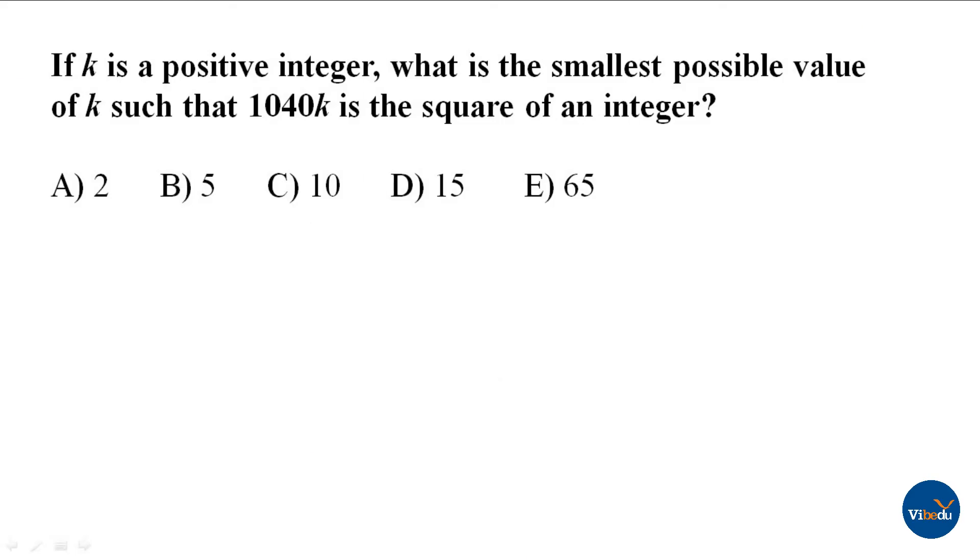The question is, if k is a positive integer, what is the smallest possible value of k such that 1040k is the square of an integer?